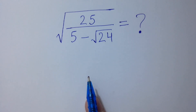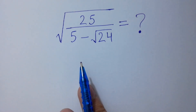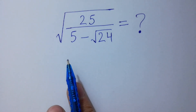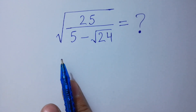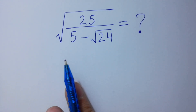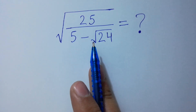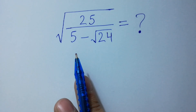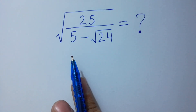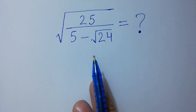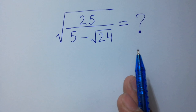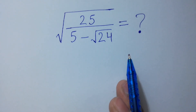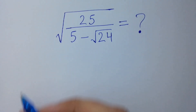Hello friends! How to simplify this nice radical math problem: square root of 25 over (5 minus square root of 24) is equal to what? Let's have a solution.